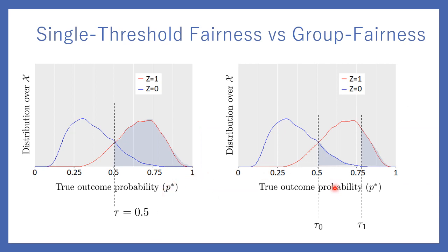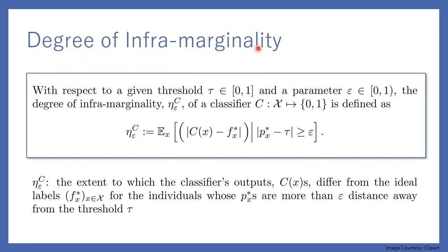Putting these two graphs side by side: the first shows single threshold fair decisions — one threshold of 0.5 — where every individual with p_x* > 0.5 is positive. However, imposing group fairness results in two thresholds, and a fraction of the population who were given a positive label under single threshold fairness are now given a negative label. We want to measure this fraction of people getting a different label because of imposing group fairness. That's where we define the degree of inframarginality.